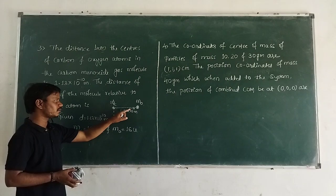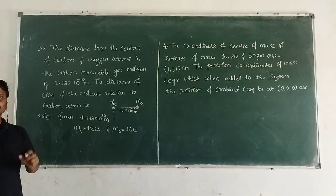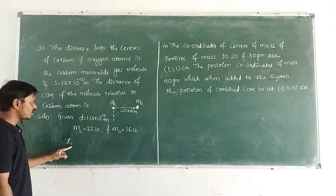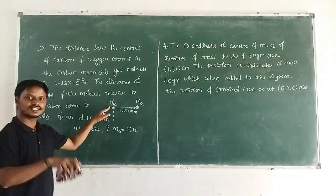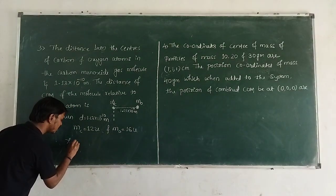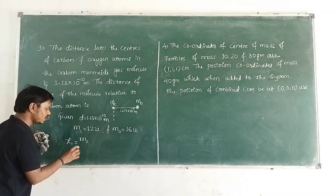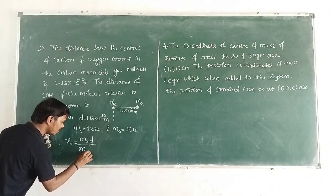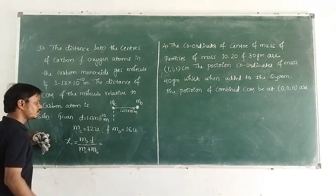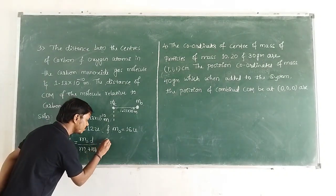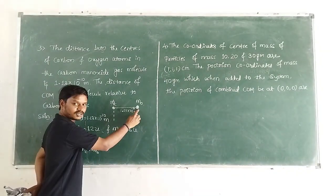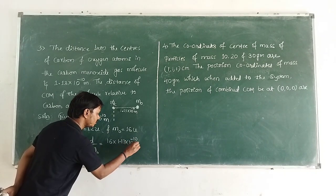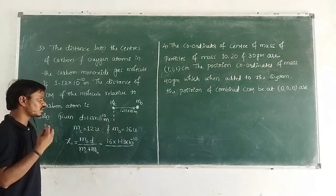We have to find the position of the center of mass relative to carbon, meaning we take the carbon atom at the origin. So let us take X1 — the position of the center of mass relative to the carbon atom. Carbon is taken as the first particle. Then X1 = mass of the second particle (MO, mass of oxygen) × D, divided by (mass of carbon + mass of oxygen).